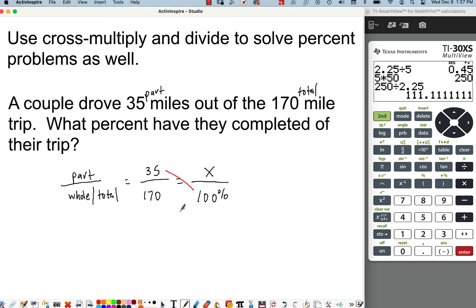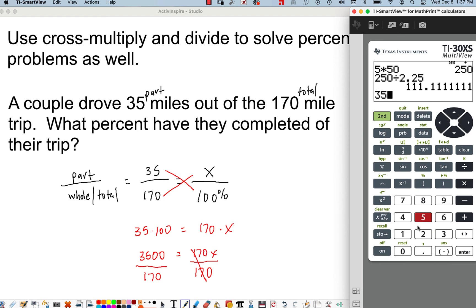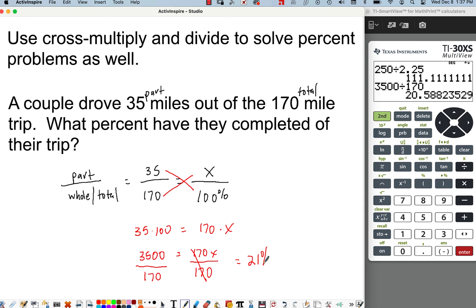So we'll do 35 times 100. And then we'll do 170 times x. 35 times 100 is just 3,500 equals 170x. So now this x is being multiplied by 170, so we have to undo that. We divide by 170. So let's take 3,500 divided by 170 equals roughly 20, we'll round up to 21%.